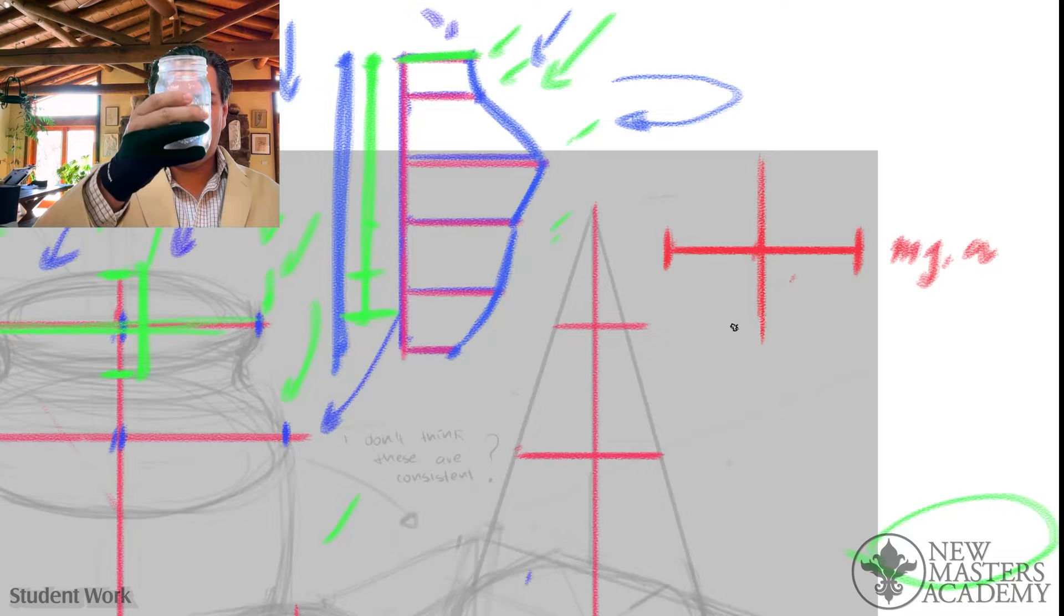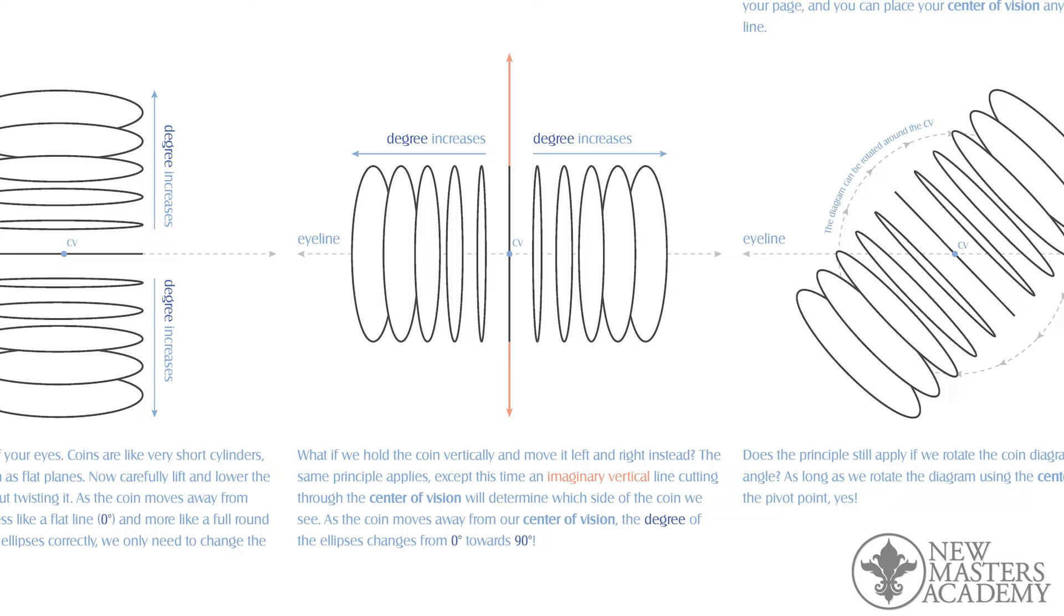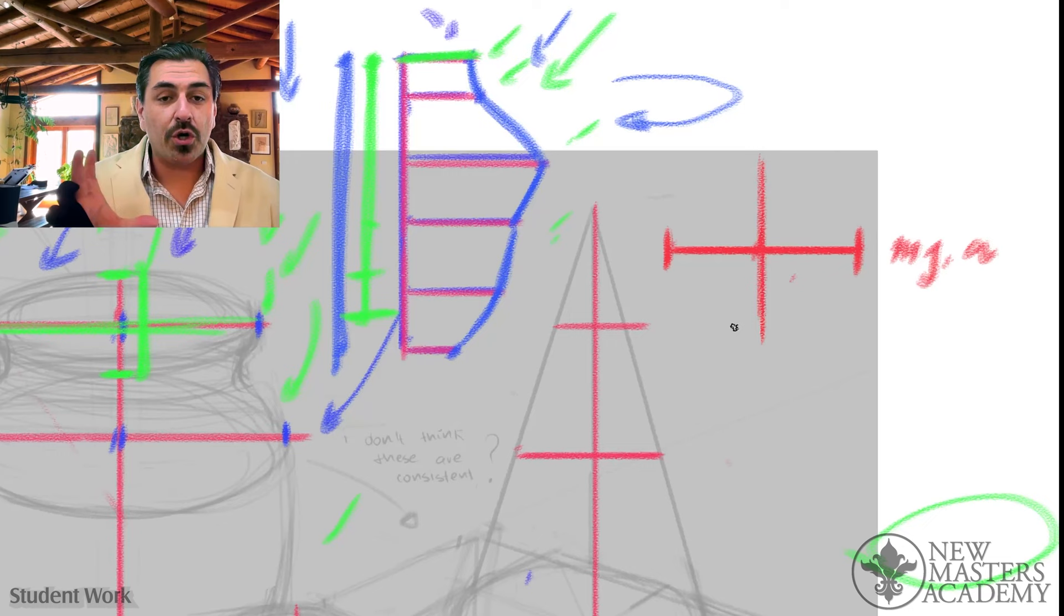That works not only up and down and left and right, but it works in all angles relative to the center of vision. Imagine just a little point in the middle of your head. So if you take any circle and you move it around up, down, left, right, it's going to change its degree.